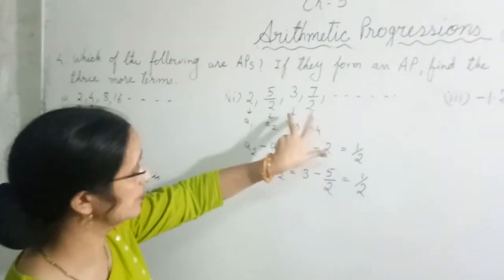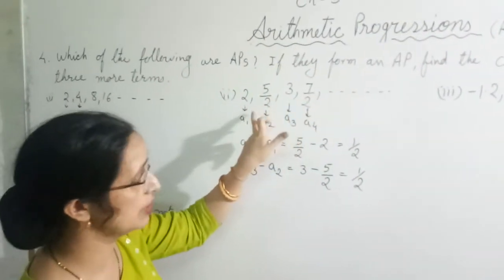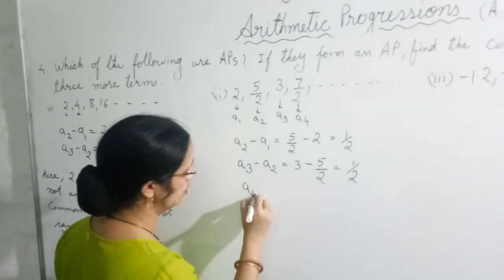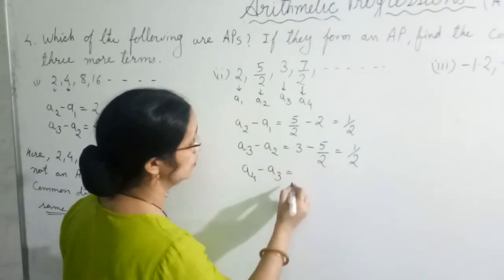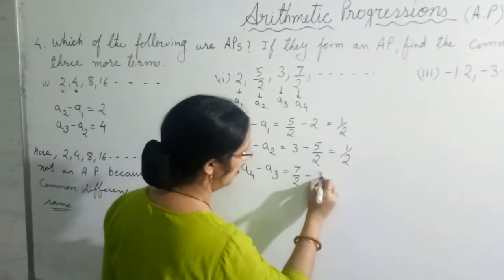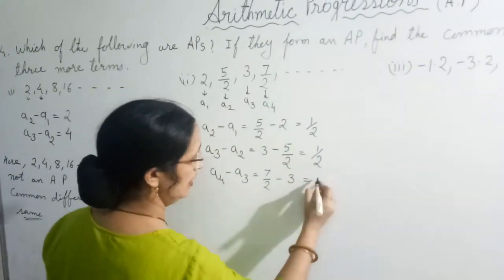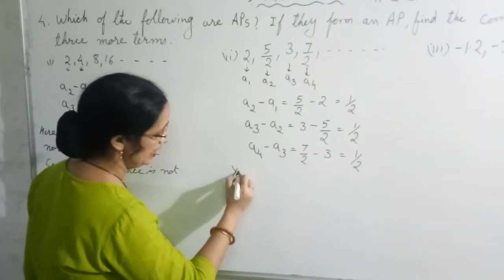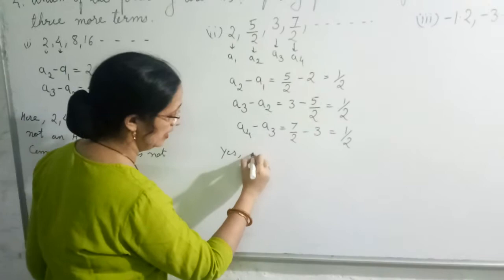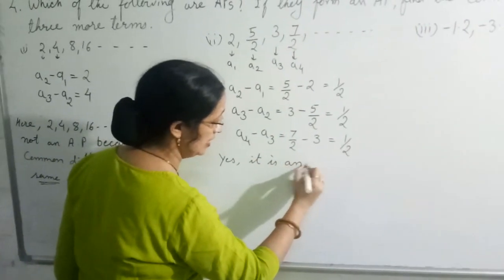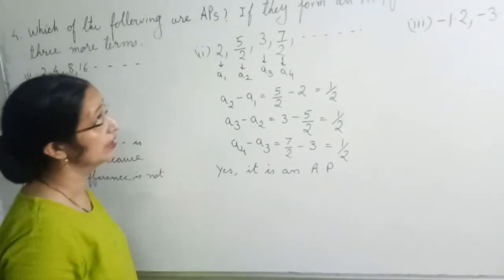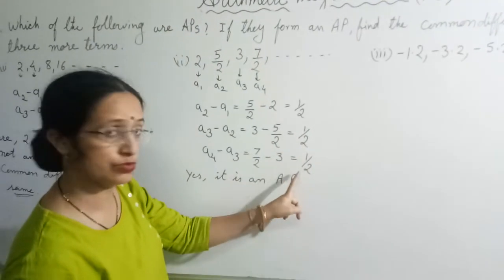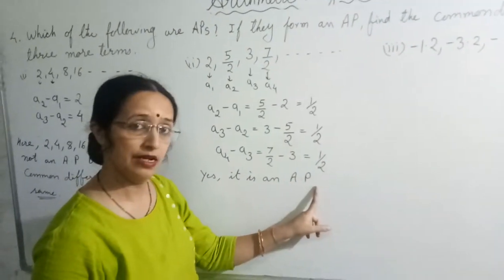Same answer came. So we can try this also. Many times in 2 terms the answer will come same in 3rd time. A4 minus A3 means 7 by 2 minus 3. So again we take LCM and solve and it is coming same. So we will write yes it is an AP. Because common difference is coming same. 1 by 2, 1 by 2, 1 by 2. Same answer came. So I am writing yes it is an AP.